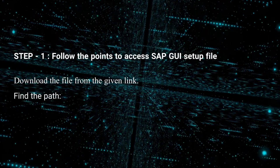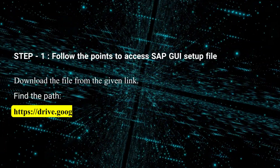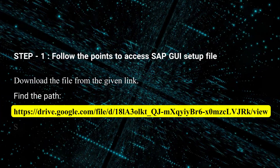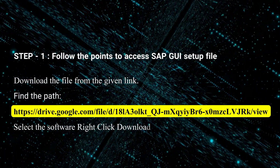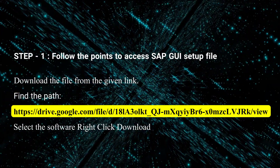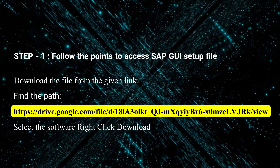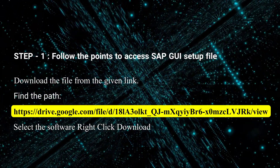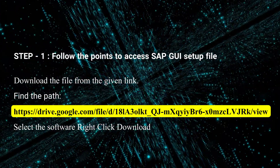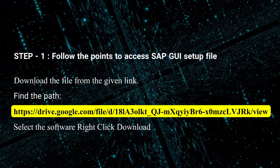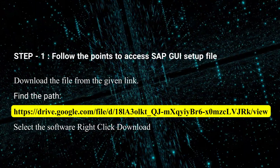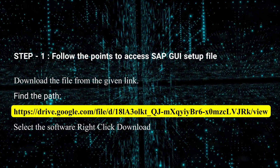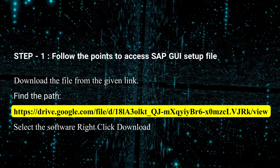Step 1: Follow the points to access the SAP GUI setup file. Download the file from the given link. Find the path — pause the video for the exact path, or refer to the description below for the exact setup file location. Locate the file SAP GUI setup in the Mac downloads folder, and double-click on the setup file for launching the SAP front-end launcher.